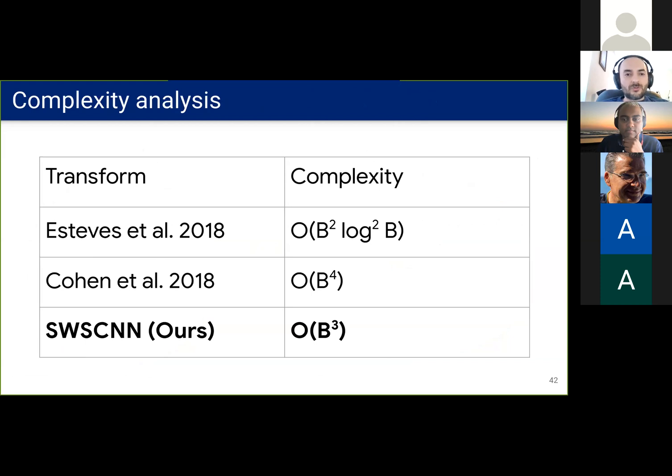Now let's talk about computational complexity. The spin-weighted spherical Fourier transform that we implement here is of order b cubed, where b is the bandwidth. And this is between the performance of both previous models. So what we're proposing here strikes an excellent balance between computational cost and expressivity.